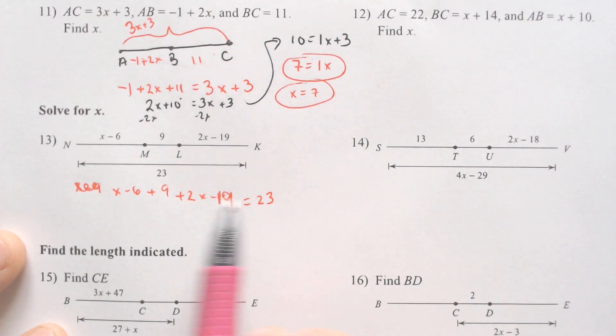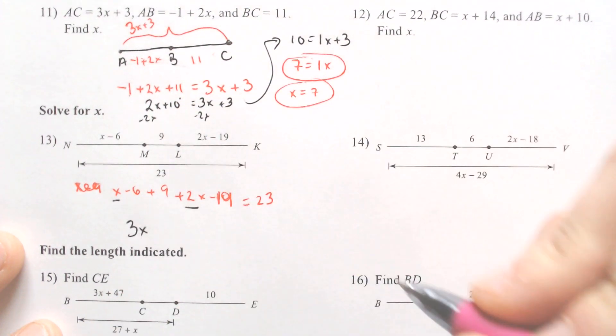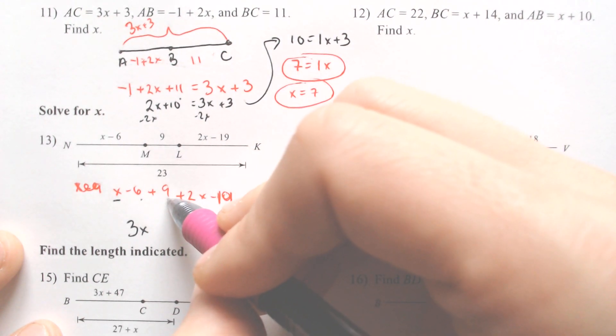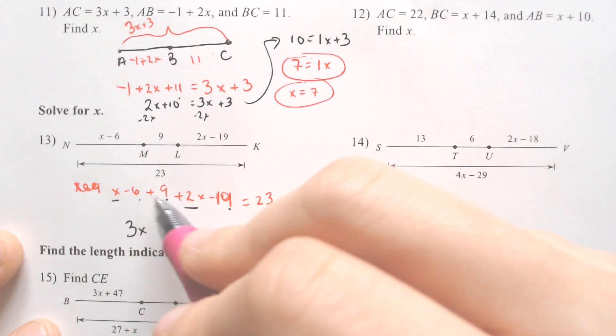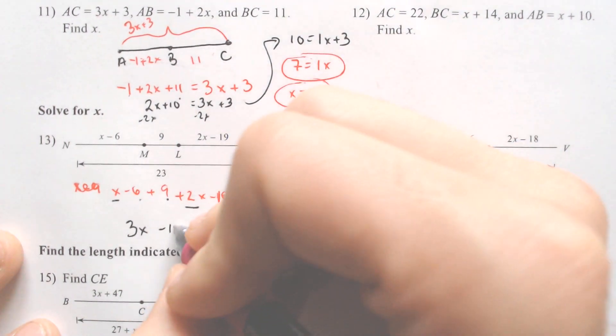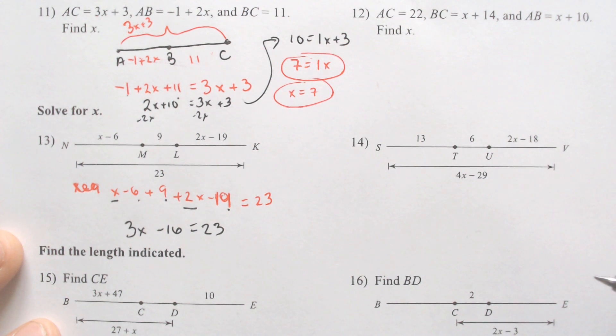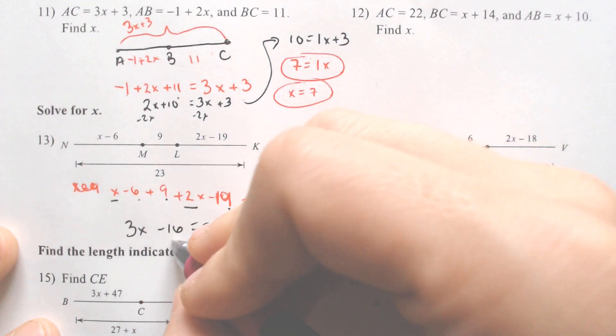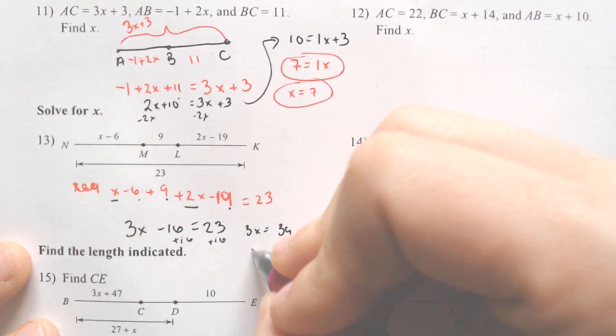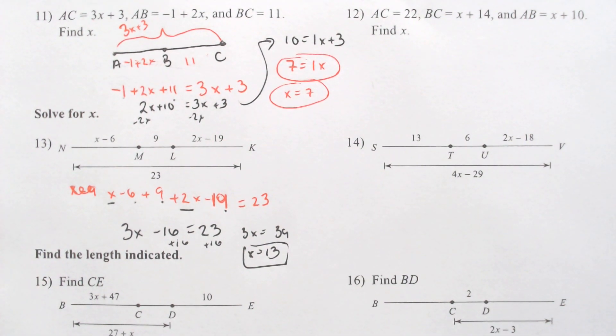Combine any like terms that you have. We have an X, we have a 2X. X and 2X makes 3X when you put them together. Then we have negative 6 with 9, that makes 3, combined with negative 19. You could add up all three of those in your calculator, and if you do that, you end up with negative 16 equals 23. Add 16 over. If we add 16 to both sides, you get 3X equals 39, which means X of course is equal to 13 when you divide by 3.